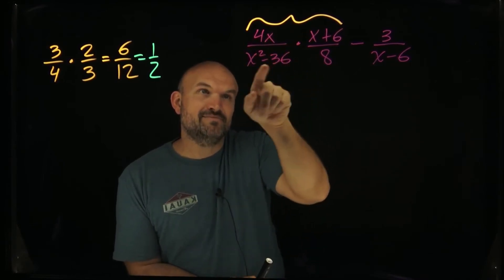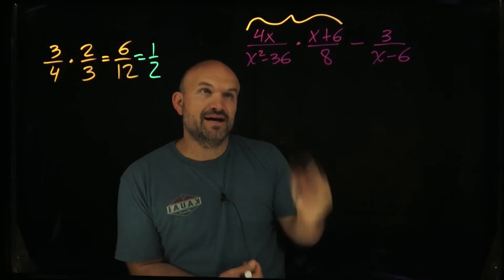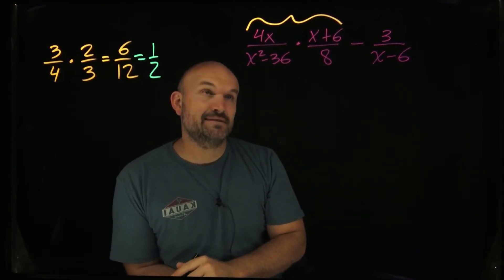I can't really factor this, but here I recognize the difference of two squares. I know I can factor an x squared minus 36 as x minus 6 times x plus 6.